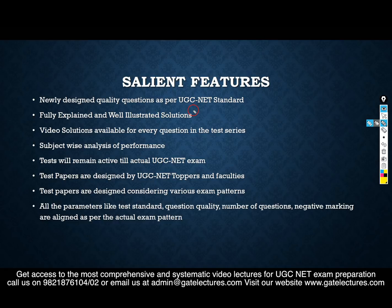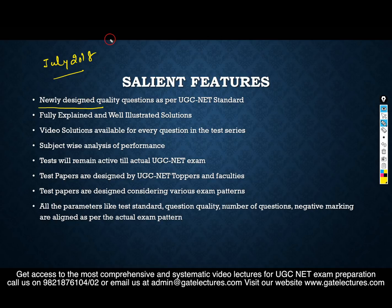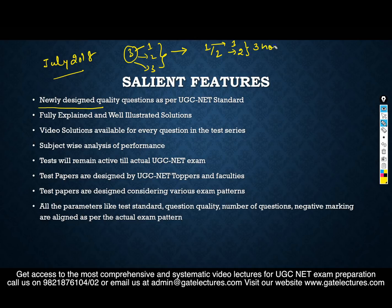The test series will be designed as per the latest pattern. For the July 2018 examination, UGC NET has changed the pattern. Initially there were three papers — paper 1, paper 2, and paper 3. Now there are only two papers: paper 1 of 1 hour and paper 2 of 2 hours, making the total examination 3 hours. The test series has been updated accordingly.